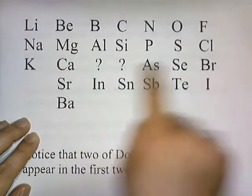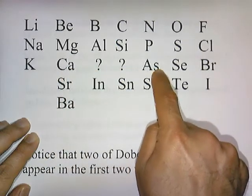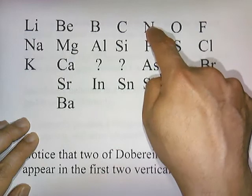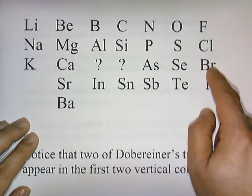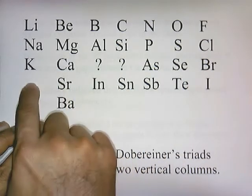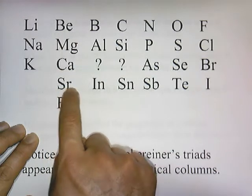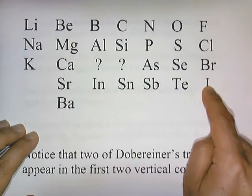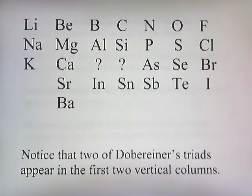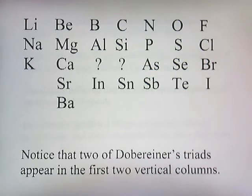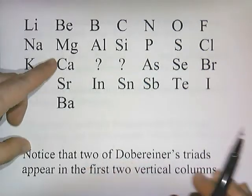The next row listed potassium and calcium. After calcium comes arsenic, but he didn't place arsenic immediately after calcium — instead he placed it in the column where properties match those of phosphorus and nitrogen. Then selenium and bromine follow. After bromine comes strontium, but he placed strontium in the column matching calcium, magnesium, and beryllium — not with potassium, sodium, and lithium. Then indium, tin, antimony, tellurium, iodine, and barium, with barium placed in the column matching its chemical properties. Two of Döbereiner's triads appear in the first two vertical columns: lithium/sodium/potassium and calcium/strontium/barium.